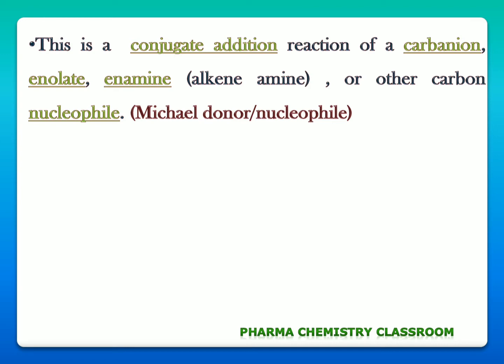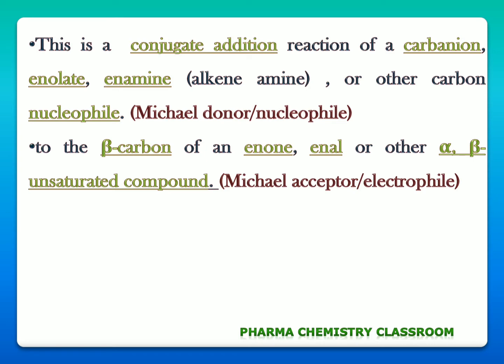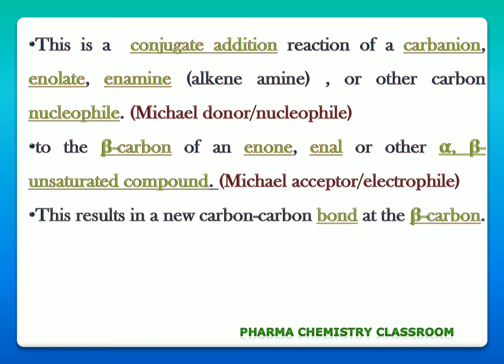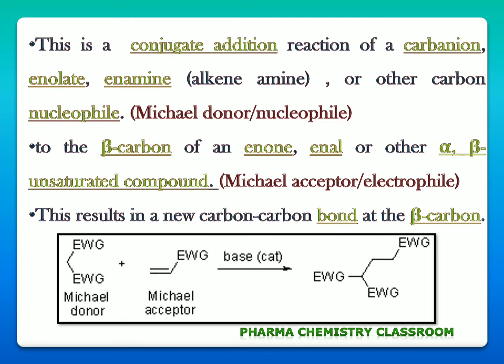When you hear donor and acceptor in organic reaction, it simply means donor of electrons and acceptor of electrons. The definition of Michael Addition Reaction: this is a conjugate addition reaction of a carbonyl, enolate, enamine, or any other carbon nucleophile — known as Michael donor — to the beta carbon of an enone, enal, or any other alpha-beta unsaturated compound — known as Michael acceptor — to get a carbon-carbon bond at the beta carbon atom. Here you can see a generalized reaction where Michael reaction is a reaction between Michael donor and Michael acceptor in presence of a base to get an addition product.